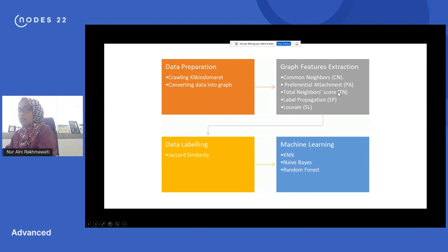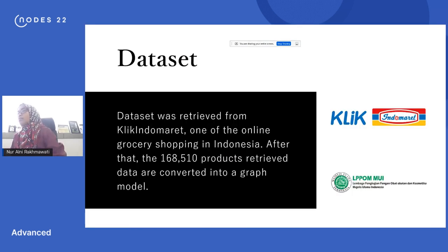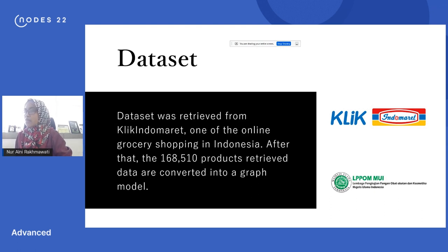Our dataset comes from Indomaret Click, one of the biggest grocery stores in Indonesia — both online and offline. We collected around 660 products and combined them with the LPPOM MUI dataset, which is a halal auditor in Indonesia. In Indomaret Click the products have no halal label, so after integrating with the LPPOM MUI data we found that about 50 percent are already labeled halal, while the rest are unknown — which is why we combined these datasets.